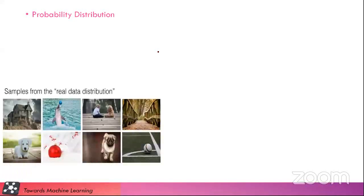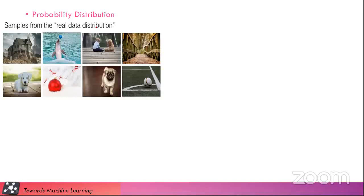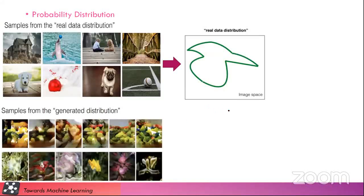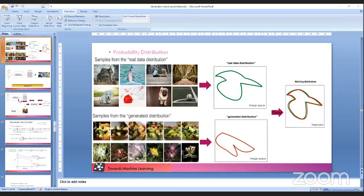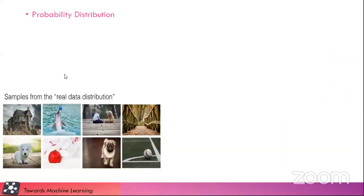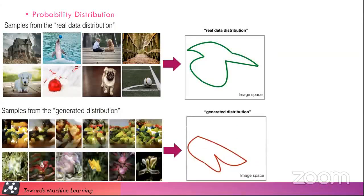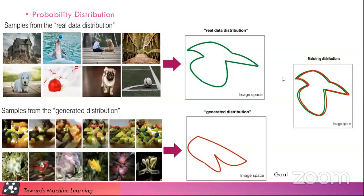Let's look at the probability distribution. These are images sampled from the real world distribution. When we encode these images in a 2D dimensional space, we get this kind of representation — this is the probability distribution of all those images. We have also taken some images from the generated distribution, from stack GANs, and plotted its probability in a 2D map. Our basic job is to match the distribution of the generator with the real data distribution — that is our goal.